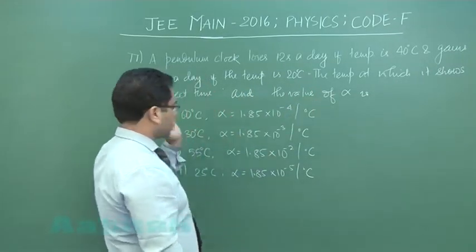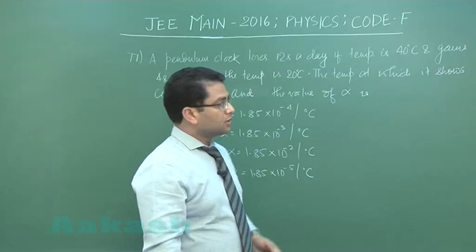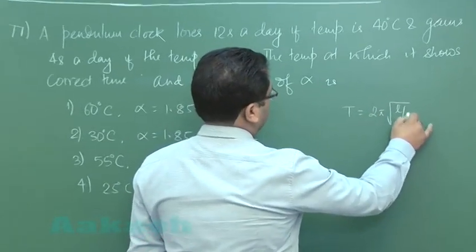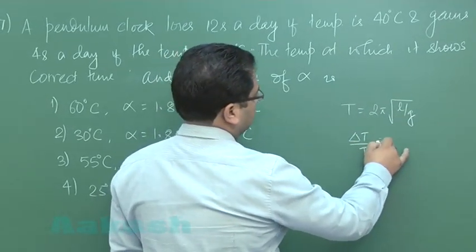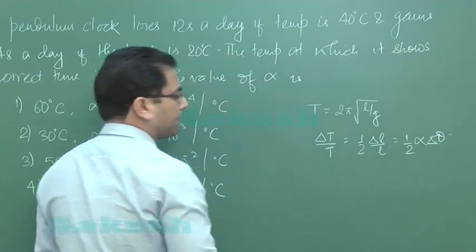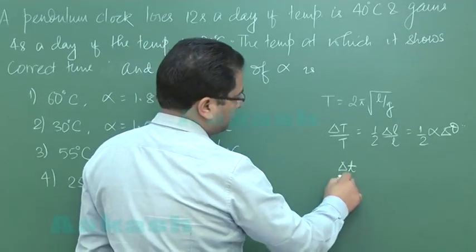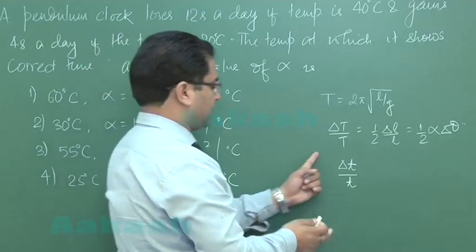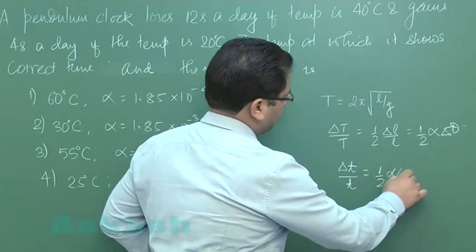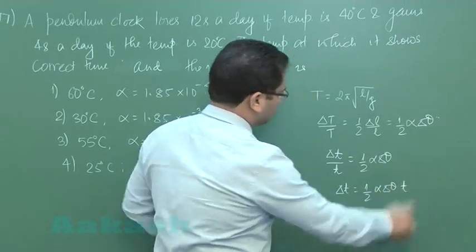We need to calculate the temperature at which the clock shows correct time and the value of alpha, the coefficient of linear expansion. The time period of a simple pendulum is 2π√(L/g). We know that ΔT/T = ½ · ΔL/L = ½ · α · Δθ, where Δθ is the change in temperature. So ΔT = ½ · α · Δθ · T, where T here is the total time of operation.